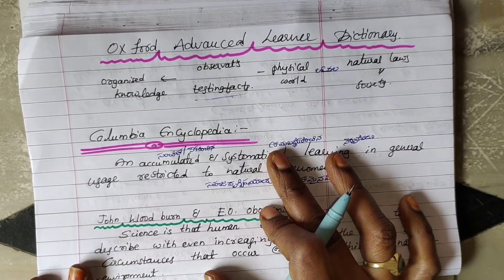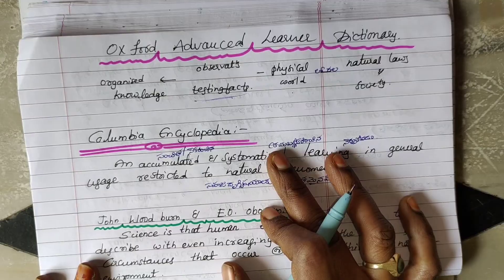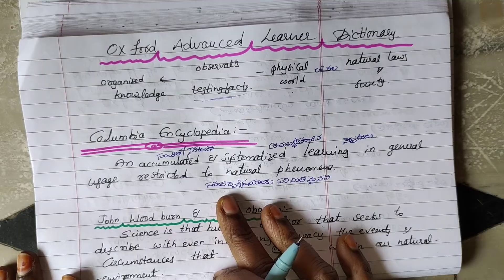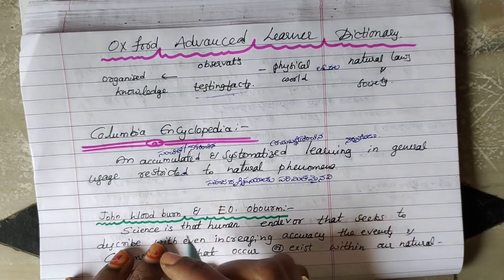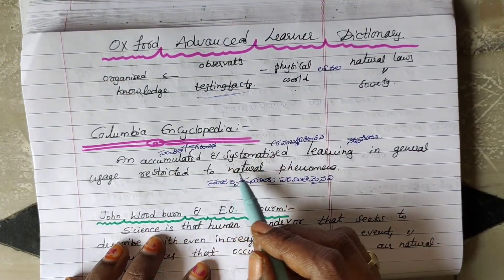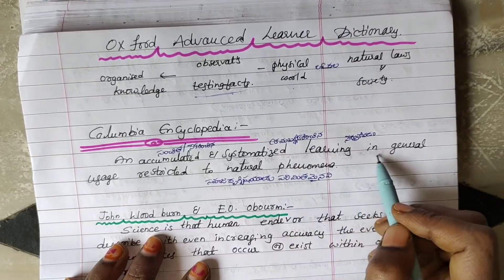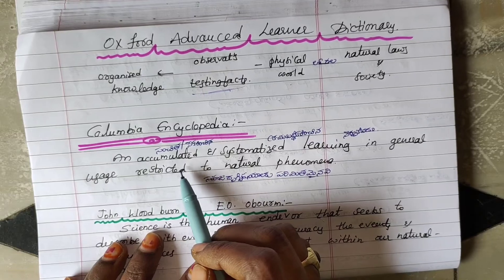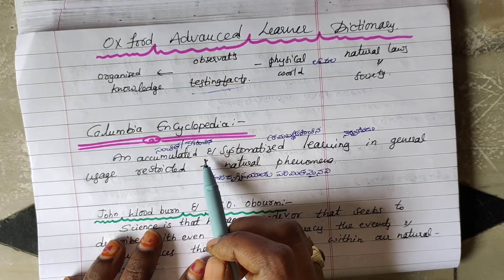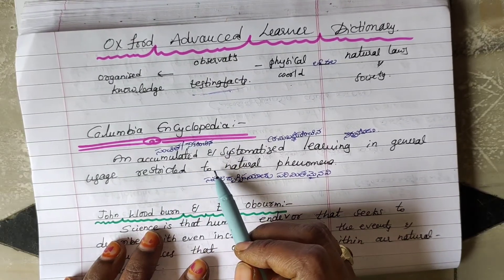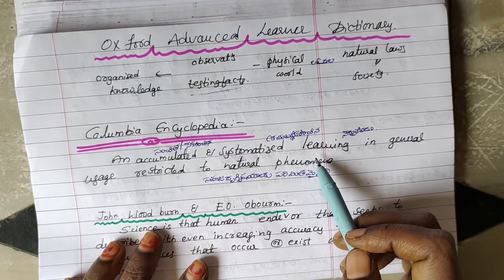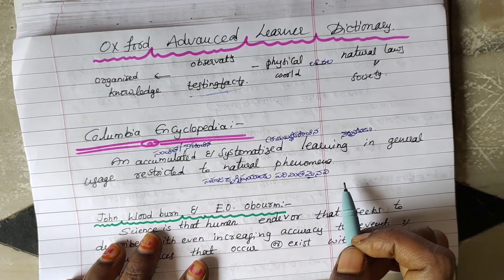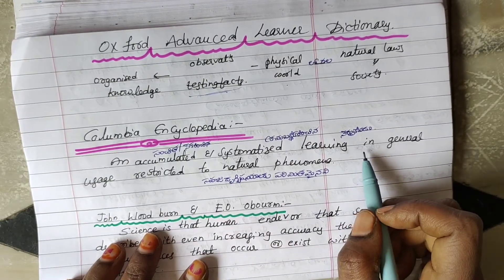Columbia Encyclopedia is called Vignana Sarvaswam. This is an accumulated and systematized learning, in general usage restricted to natural phenomena. Accumulated means it is not just science — the science is called Vignana Sarvaswam.